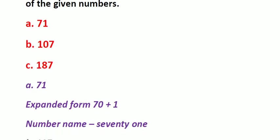So the number name is seventy. See here — seventy. You should first write 70 followed by 1: seventy-one. First write the number of tens, then write the number of ones — seventy-one.